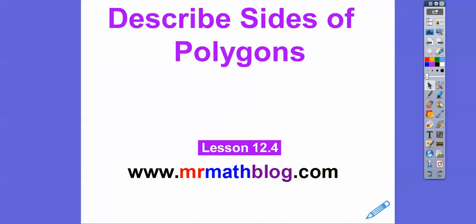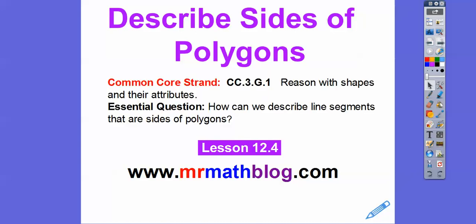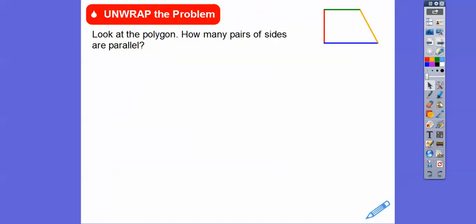Hey everybody, this is Mr. Math Blog. This is one of my shortest lessons right here. We're just describing the sides of polygons. So remember, a polygon is a closed figure made up of line segments. So how can we describe line segments that are on the sides of polygons?